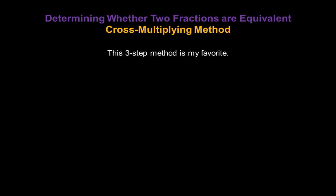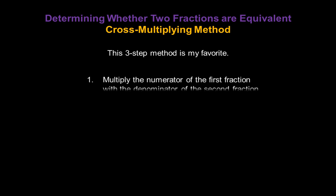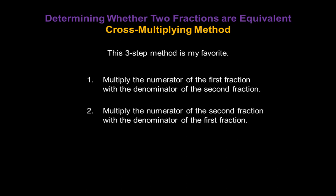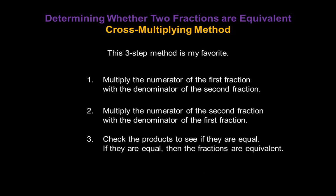We're going to start with the cross-multiplying method. This is a three-step method. Step one: multiply the numerator of the first fraction with the denominator of the second fraction. Step two: reverse that process and multiply the numerator of the second fraction with the denominator of the first fraction. Step three: check the products to see if they're equal. If they're equal, then the fractions are equivalent.